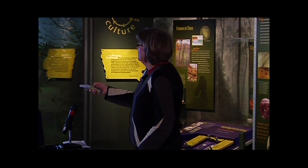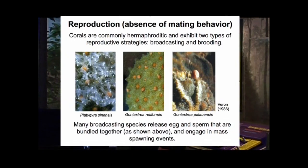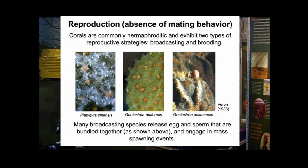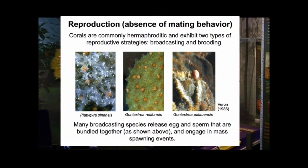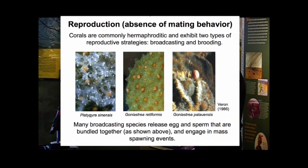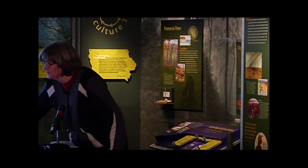In terms of reproduction, corals are very simple—many are hermaphroditic, producing both sperm and eggs. They exhibit two reproductive strategies: broadcasting, in which gametes are released into the water column for external fertilization, and brooding, in which eggs are retained within the central body cavity. Many broadcasting species release bundled egg and sperm and engage in mass spawning events, creating the possibility for hybridization, though the extent to which hybridization occurs is still unclear.